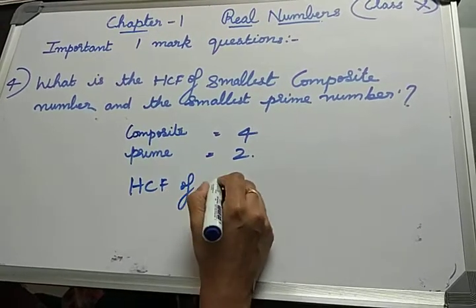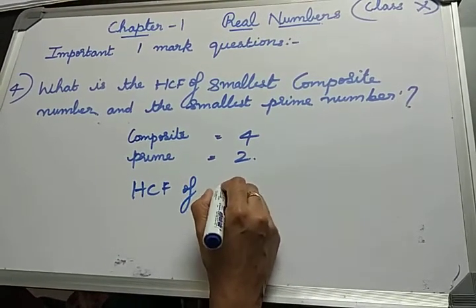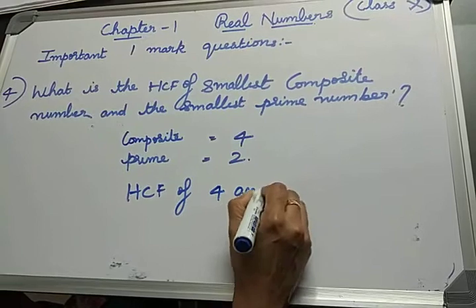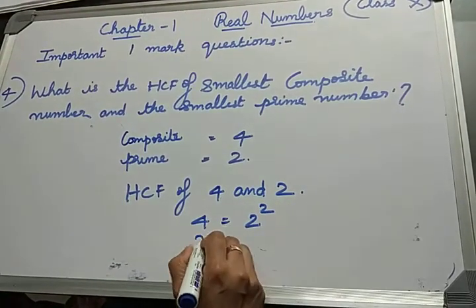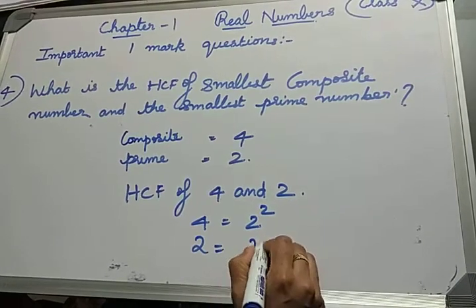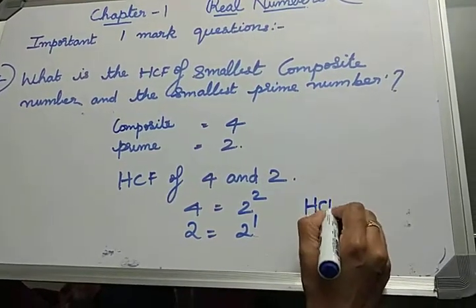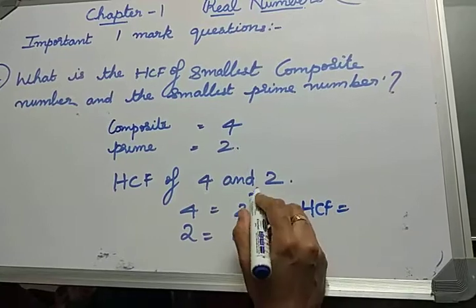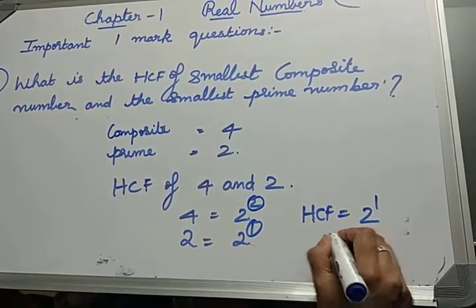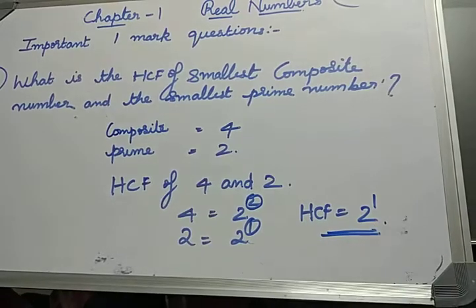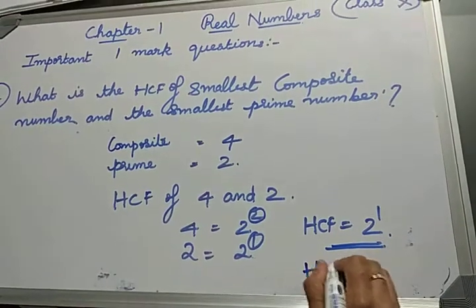The question simplifies to HCF of 4 and 2. We know 4 is 2². And 2 is 2¹. We just saw that for HCF, you write the smallest power. Between 1 and 2, the smaller is 1. So HCF is 2¹, or HCF is 2.